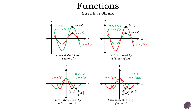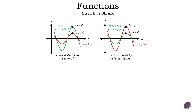Now let's talk about stretch versus shrink. We have two types: vertical and horizontal. With vertical stretch and shrink, we have a coefficient which affects the output, so the y value increases or decreases depending if the coefficient is greater than 1 or between 0 and 1.